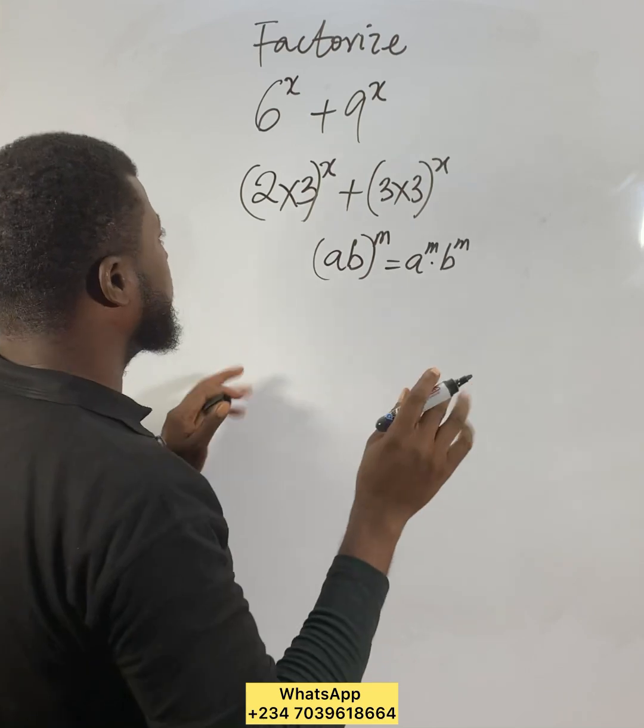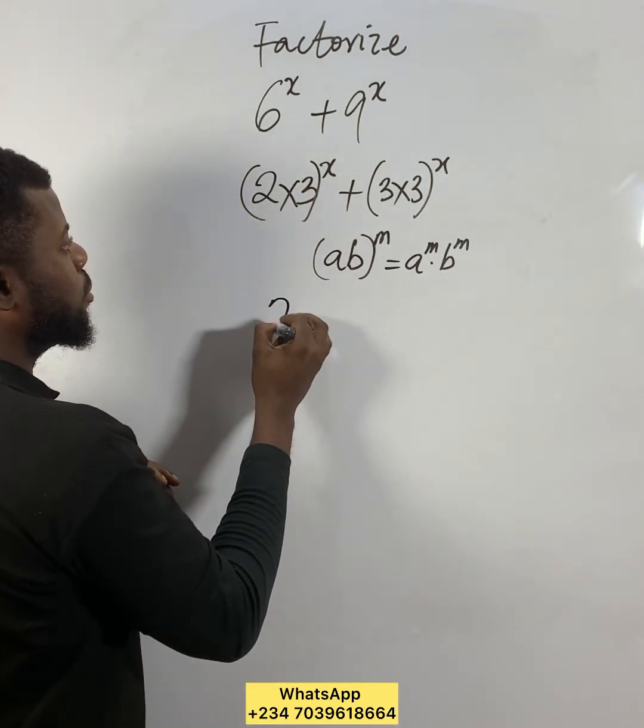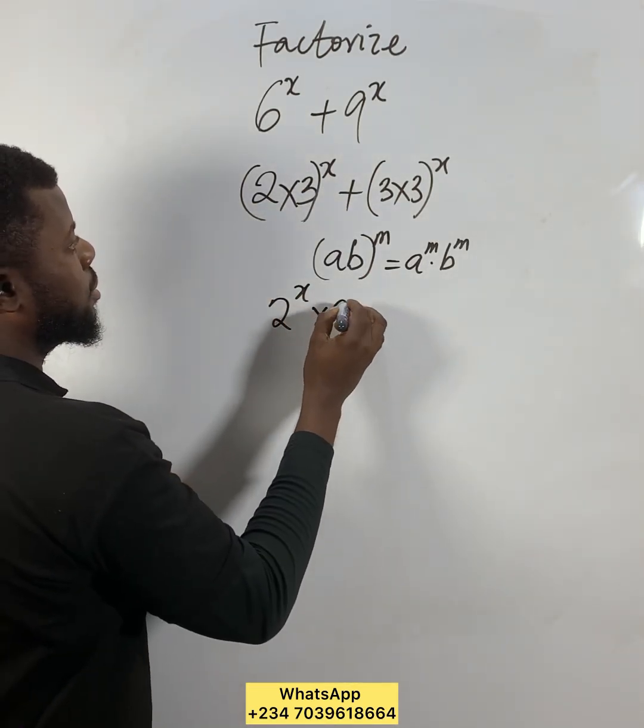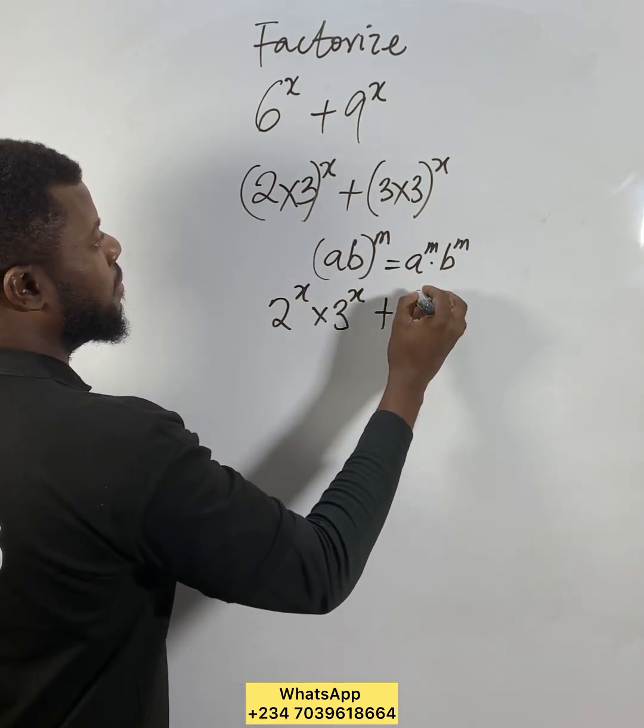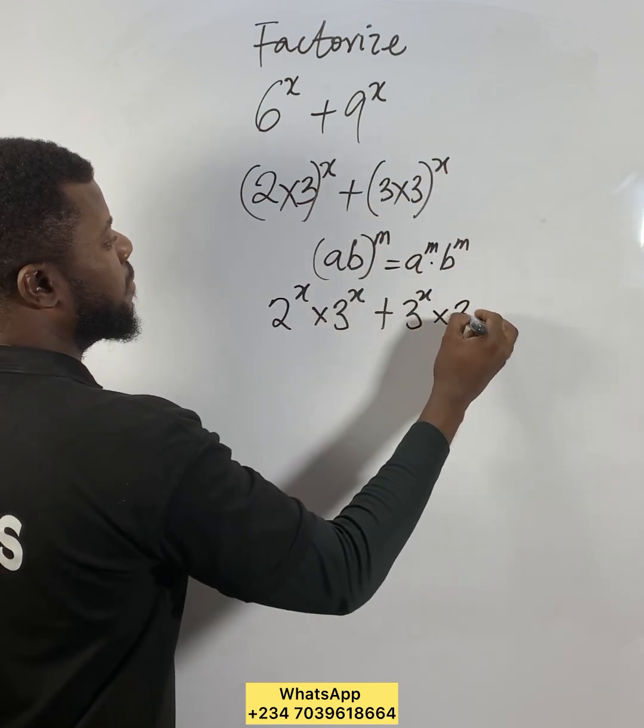Now my expression has 2^x times 3^x plus 3^x times 3^x.